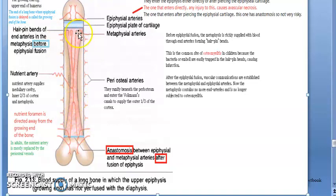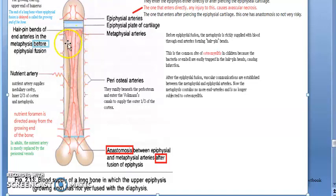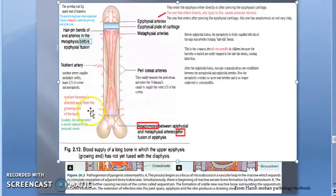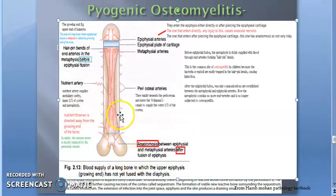We are in the bone marrow at the metaphysial end of the marrow cavity, and here there will be pus — suppuration. There will be suppuration at the metaphysial end of the marrow cavity. At this stage, microscopy will reveal congestion, edema, and lots of neutrophils, because it is an infection.